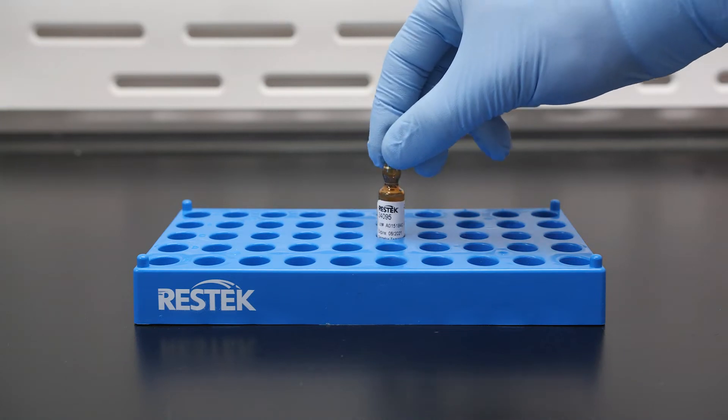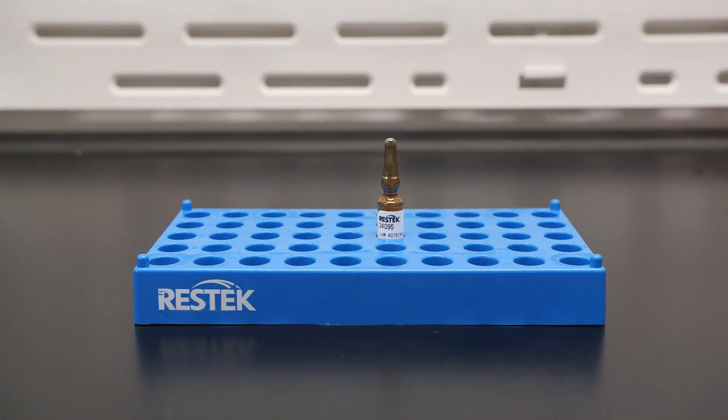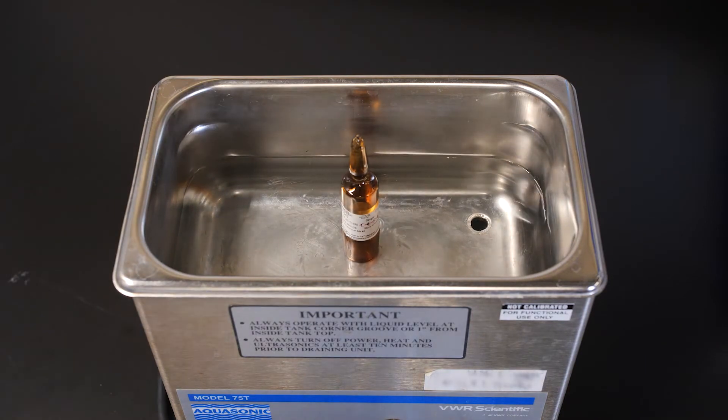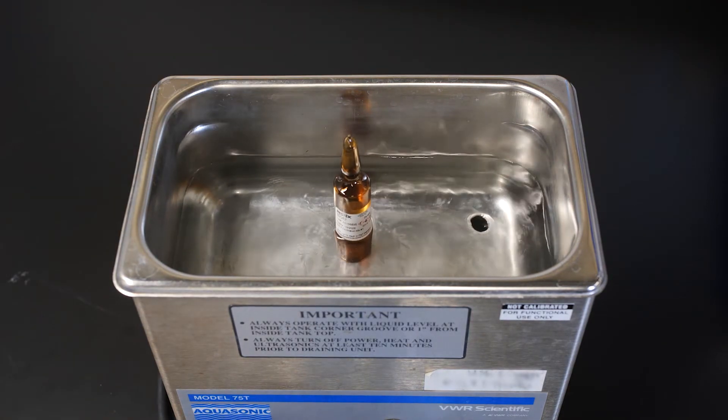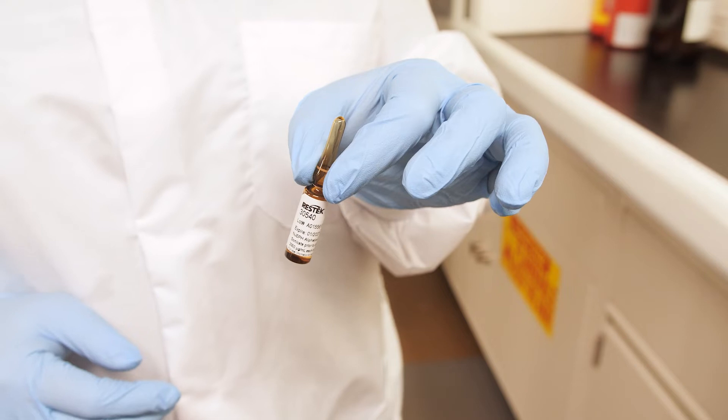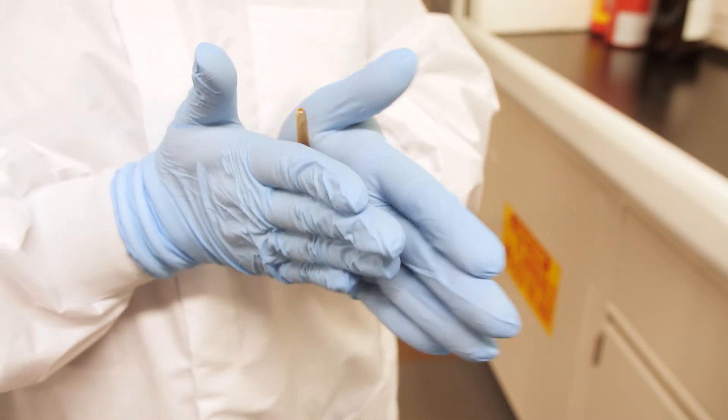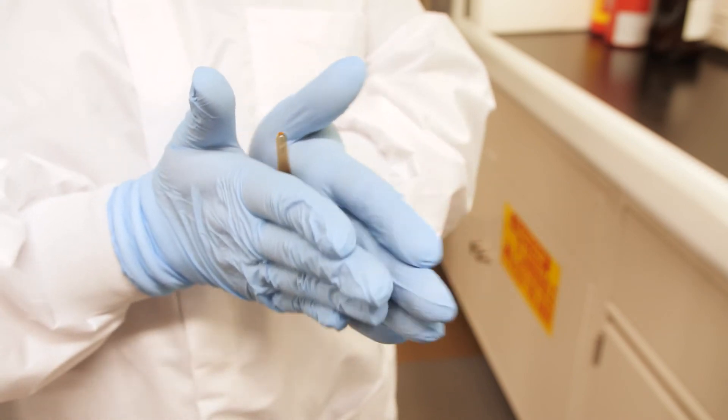The first is to simply allow the standard to come to room temperature. The second is to sonicate the standard for 10 to 15 minutes, and then allow the standard to cool to room temperature. The third is to gently warm the standard by rubbing the ampoule between gloved hands, and then allow the standard to come to room temperature.